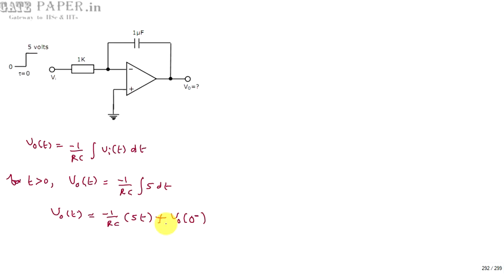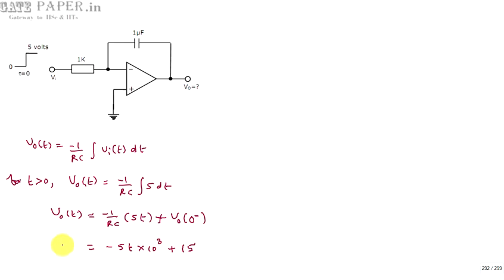Since we are taking integration, we must consider the initial value because integration is continuous summation from the starting point. If the starting point is some value, that value has to be considered. Using R equal to 1 kilo ohm and C equal to 1 micro farad, RC becomes 1 millisecond. When RC comes out, it becomes 10 power plus 3 in the numerator. So V0(T) equals 5t into 10³ plus V0(0⁻). Since V0(0⁻) is given as 15 volts, V0(T) equals 15 minus 5t into 10³.